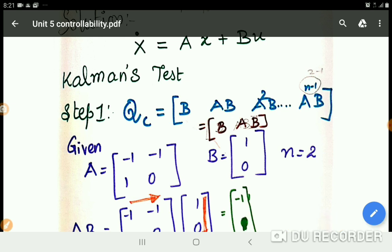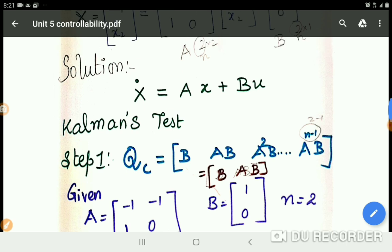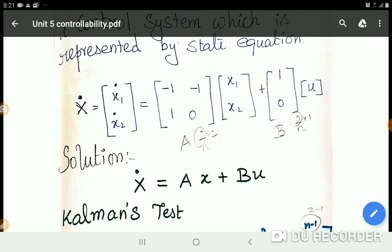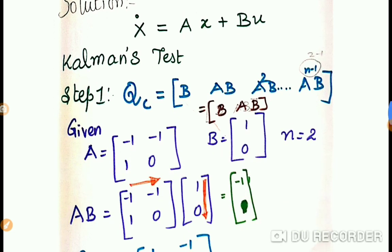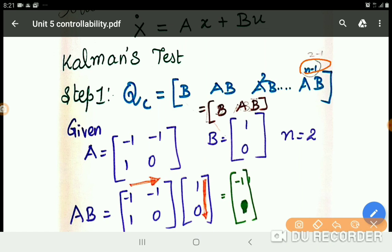So how to find the rank? Observe the question. In the question, A matrix is given as a 2×2 matrix, and B matrix is a 2×1 matrix. This is what we call n. As per the given question, n is 2. So n = 2, which means n - 1 = 1, so our equation reduces to [B AB] alone.